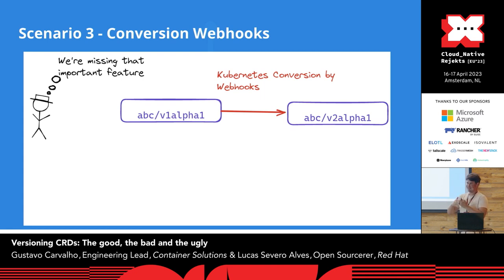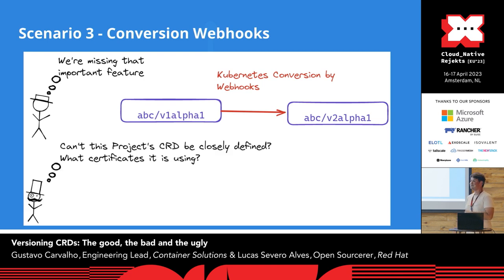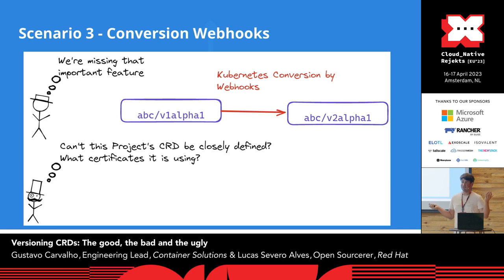That works marvelously in theory. All you need to do in your CRD is tell Kubernetes to talk to a webhook. But here's the issue: the custom resource definition now carries environment-dependent information — the service the webhook is using, the names, the namespace where the webhook is installed, what certificates the webhook is using. You also need to handle certificates. Your users will be very frustrated when they find out. Even worse, any user just wanting to use the new version will be frustrated that they need to install a whole webhook just to handle conversion.